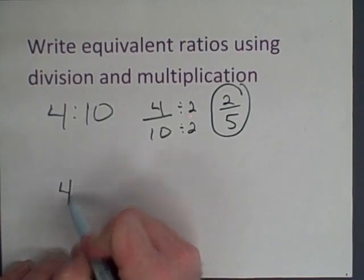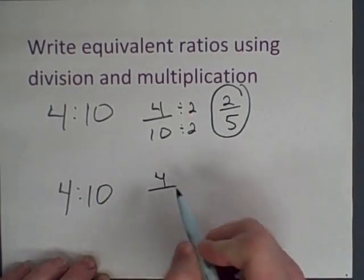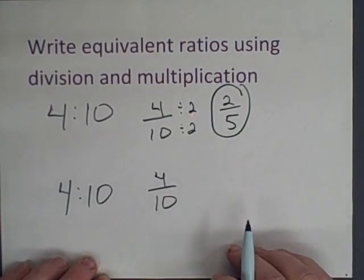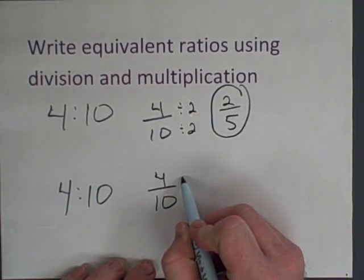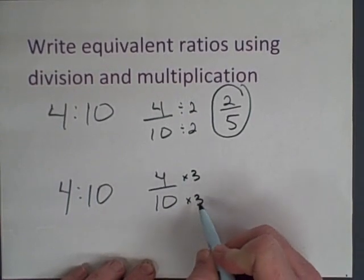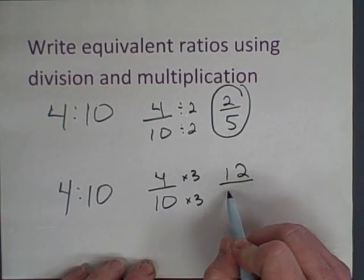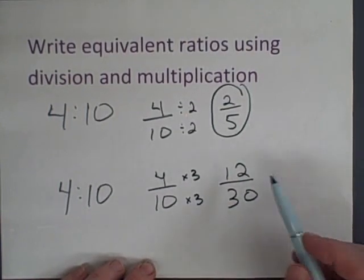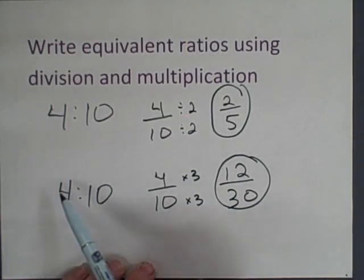We could use the same ratio of four to ten. Again we'll write it as a fraction four over ten and instead of dividing, let's triple the ratio. We could multiply the numerator and the denominator by three and we would get a ratio of twelve to thirty. Again this ratio is equivalent to the original four to ten.